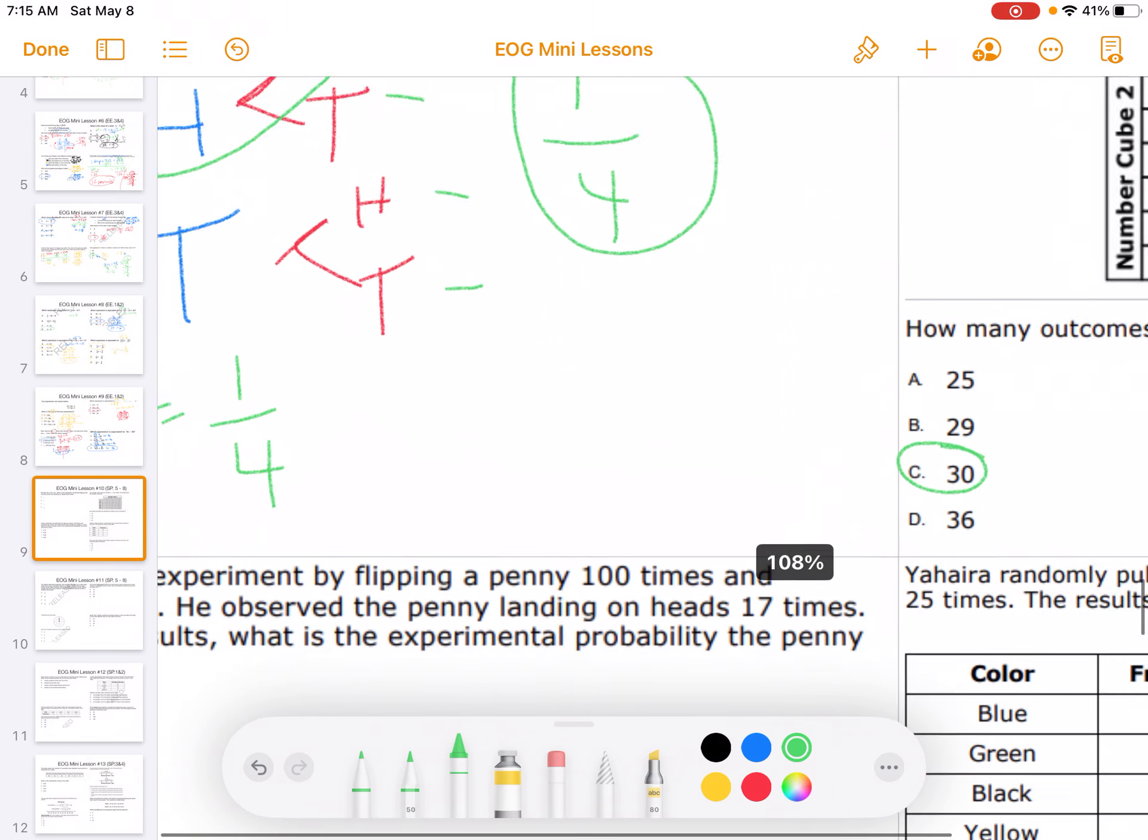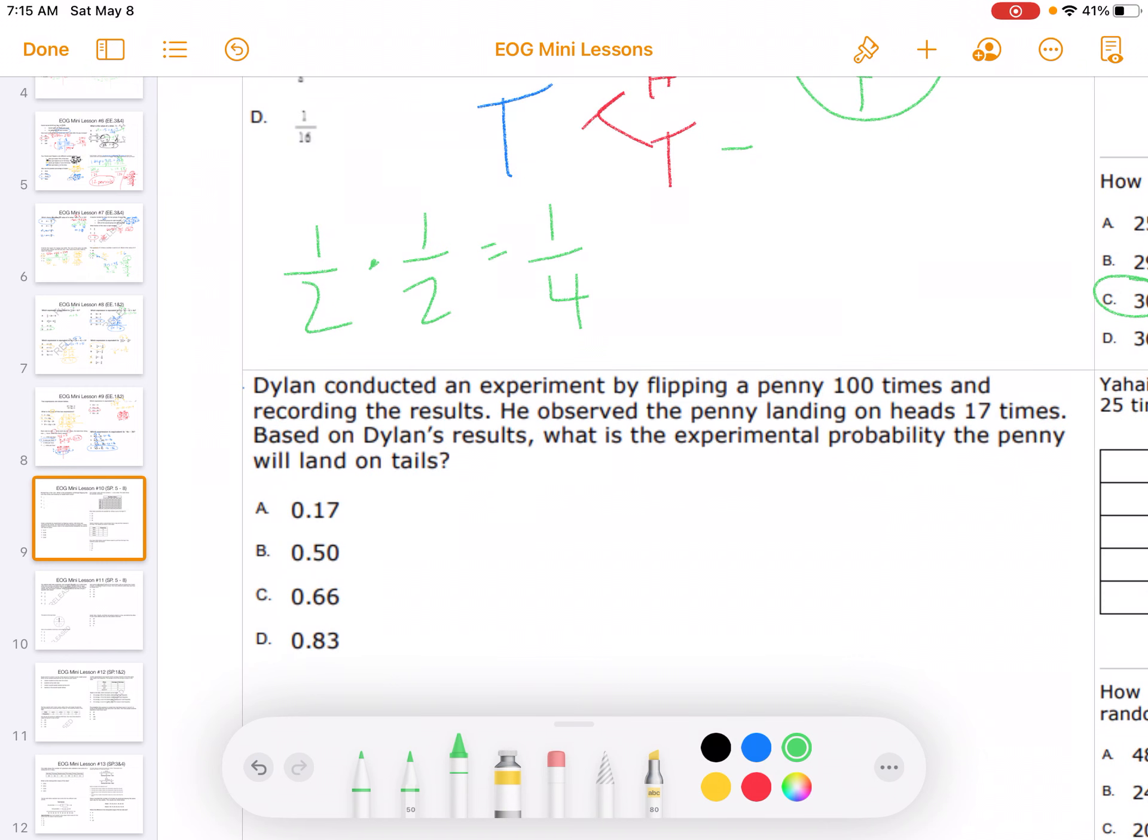Dylan conducted an experiment by flipping a penny 100 times and recording the results. He observed that the penny landed on heads 17 times. Based on Dylan's results, what is the experimental probability that the penny will land on heads?